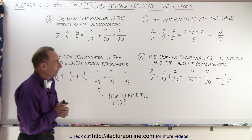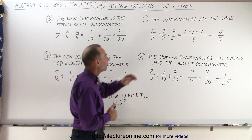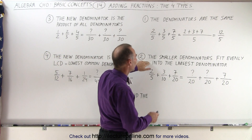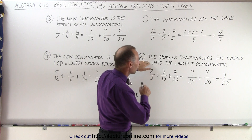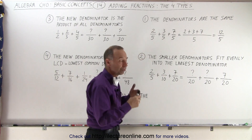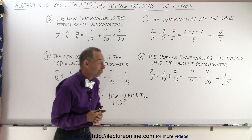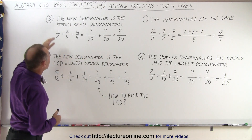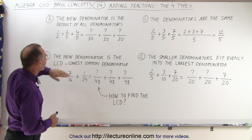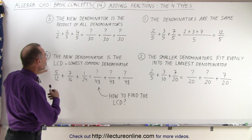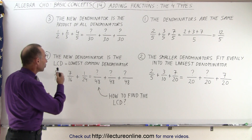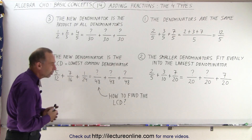The four types are the following. The first type is where the denominators are the same. The second type is where the smaller denominators fit evenly into the largest of the denominators. The third type is where the new denominator is the product of all the denominators. And the fourth type is where the new denominator is the LCD — the lowest common denominator — of all the denominators.